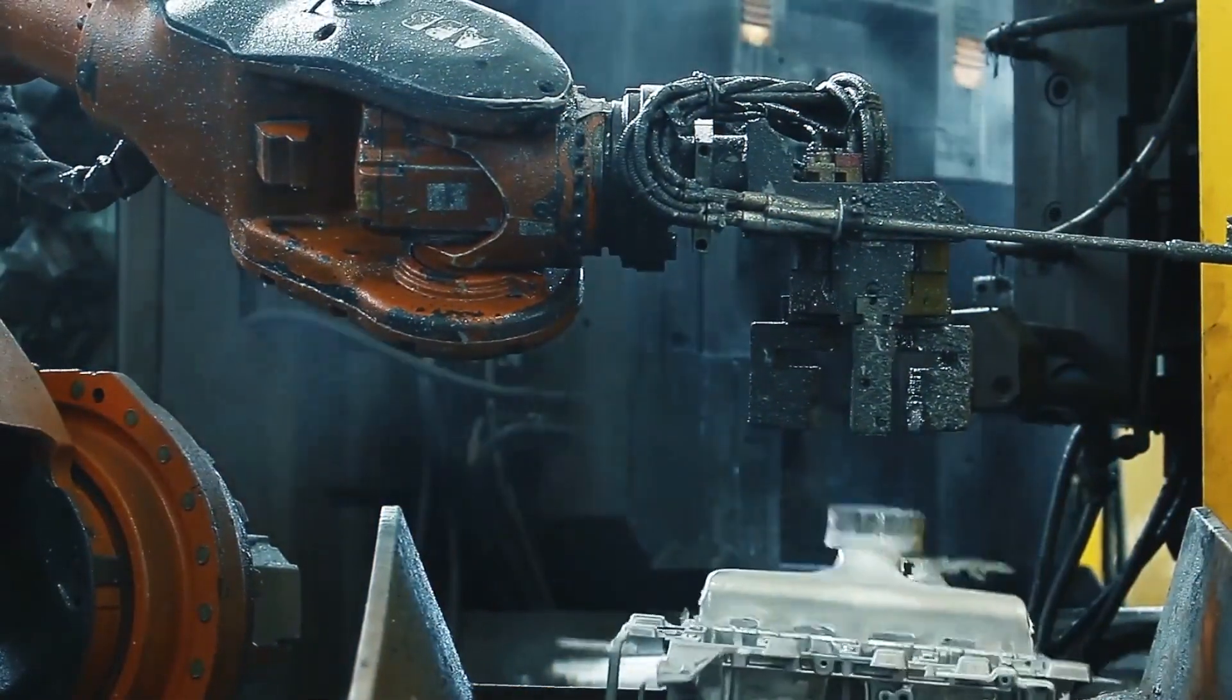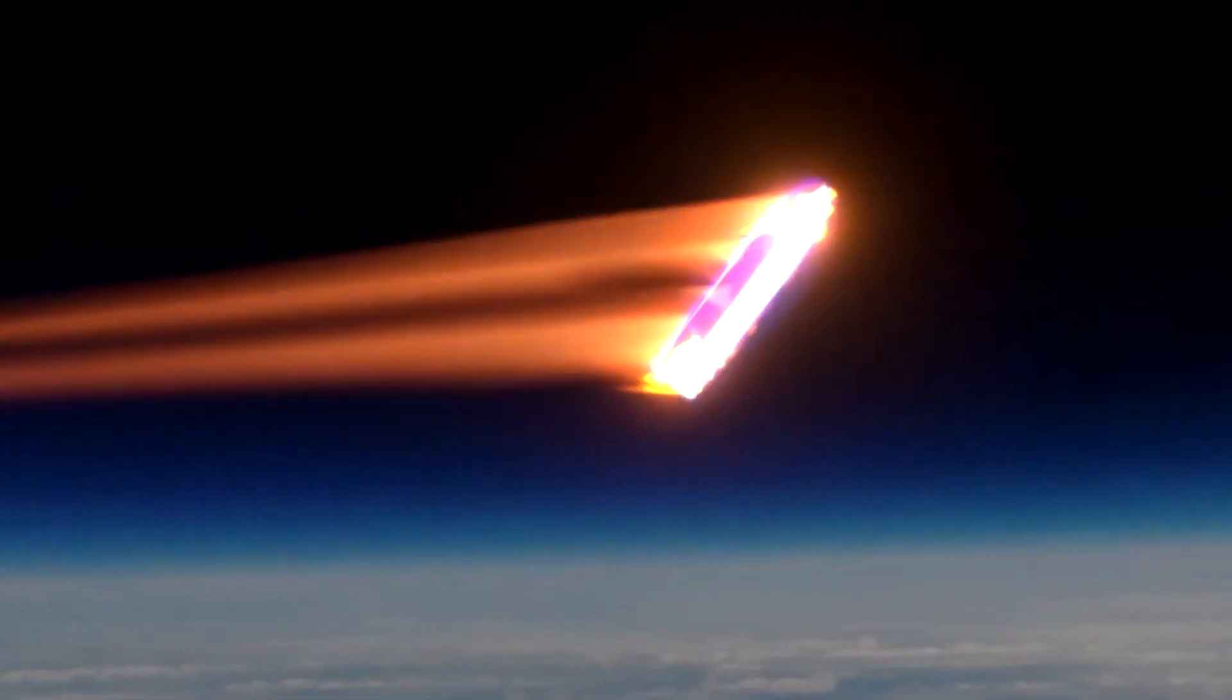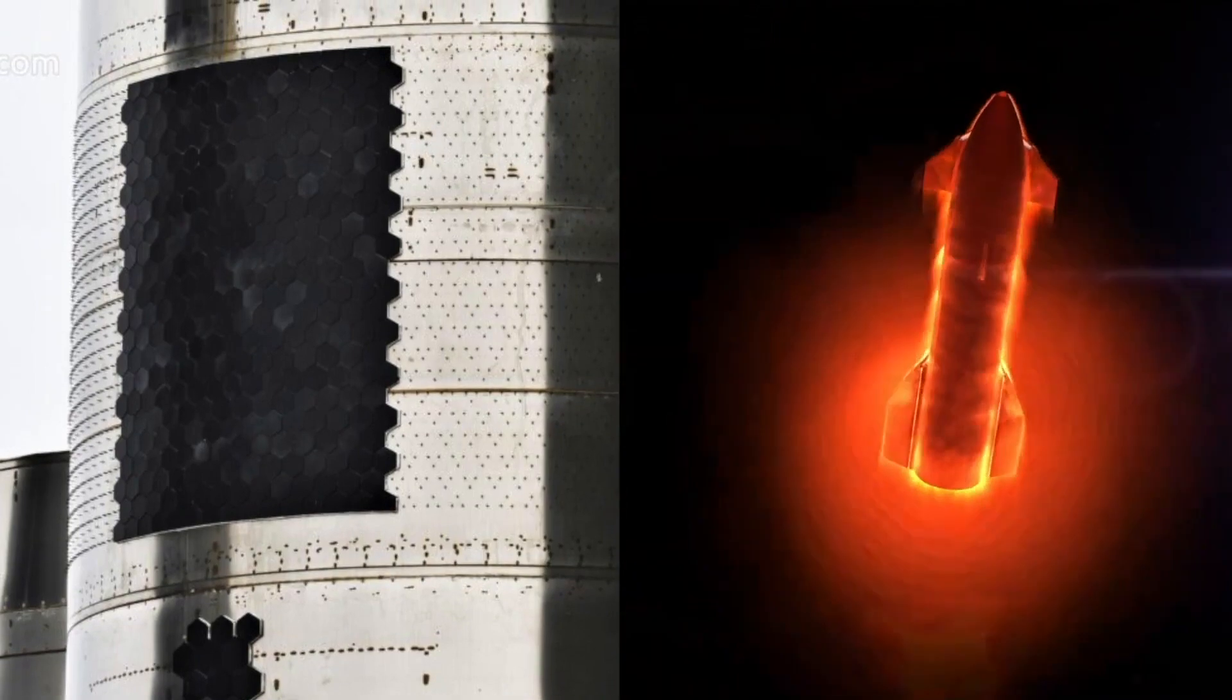This kind of bakery is how SpaceX manufactures the most important parts of their thermal protection systems. In other words, this is the facility where SpaceX creates their heat shield tiles.